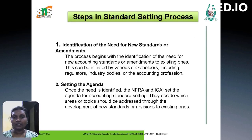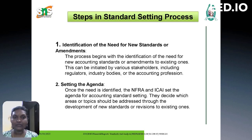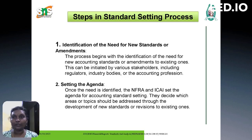Various steps are involved in the standard setting process. The first step is identification of the need for new standards and amendments. It is important to know what the need is for setting such a new standard. In this process, new accounting standards or amendments to existing ones can be identified first, then this can be initiated by way of stakeholders including regulators, industry bodies or the accounting profession.